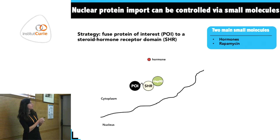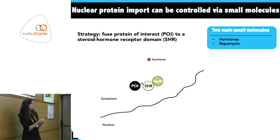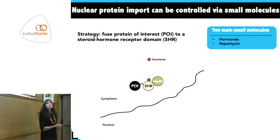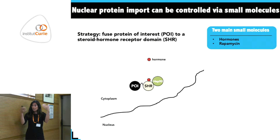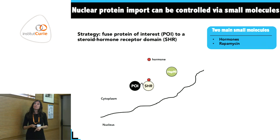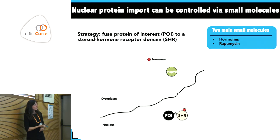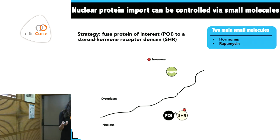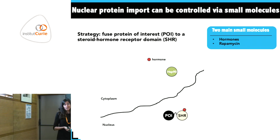Once the hormone is given to the cell, it binds to this domain and disrupts the interaction with Hsp90, allowing your molecule of interest to enter the nucleus — either via passive diffusion or because it carries an NLS, since otherwise it wouldn't work.